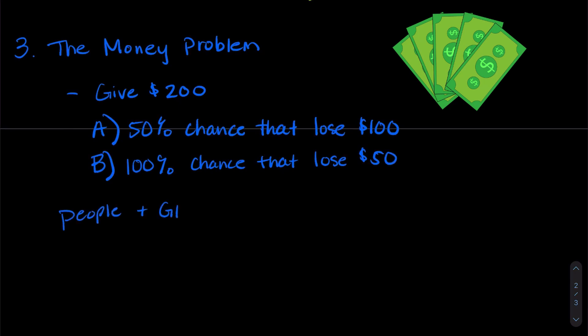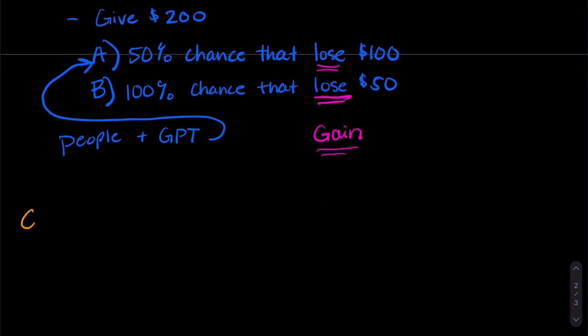Well, people and GPT generally choose A, and this is because they don't want to lose anything. So if there's a chance that they're not going to lose anything, that's what they decide on. Now, if we change the wording here from lose to gain, our answers actually shift because here we have a 100% chance we gain something. Both people and GPT have the same shift of answers with the wording change.